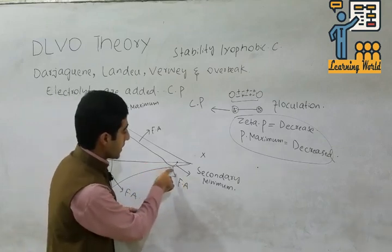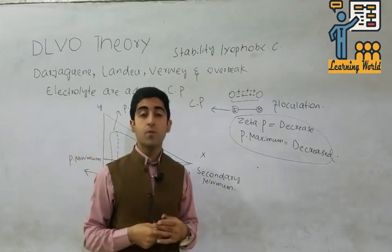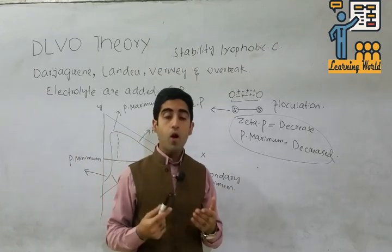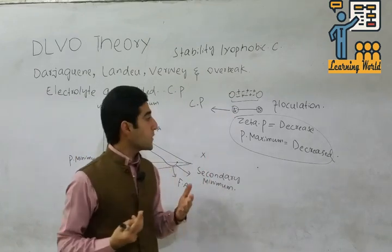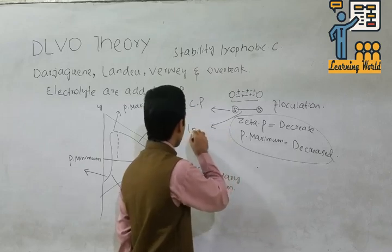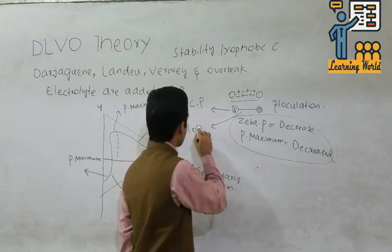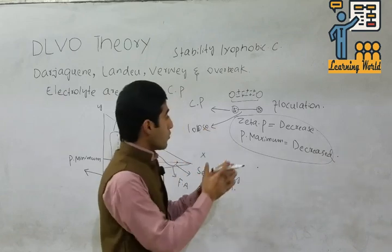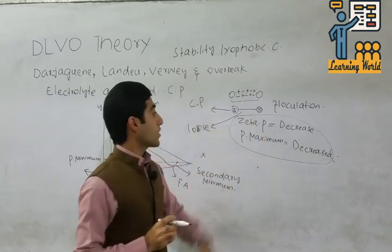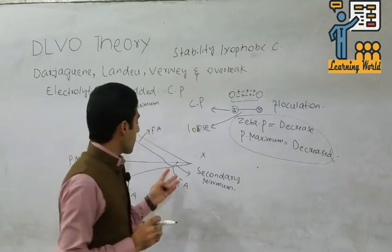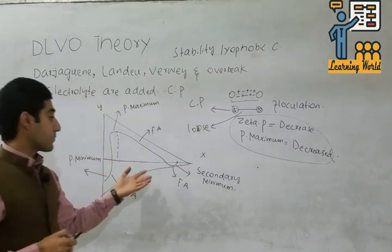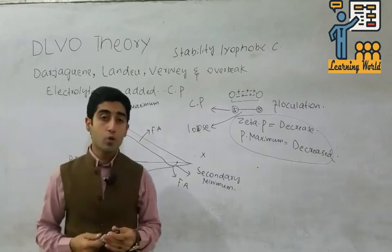That's all about the DLVO theory. When electrolyte is added, we showed the secondary minimum — at this point forces of attraction occur but with some distance between the particles. This phenomena is called flocculation, where particles attract each other but bond formation is loose. Due to this flocculation the secondary minimum occurs. With the passage of time the electrolyte is absorbed and the phenomena repeats. Thank you very much.